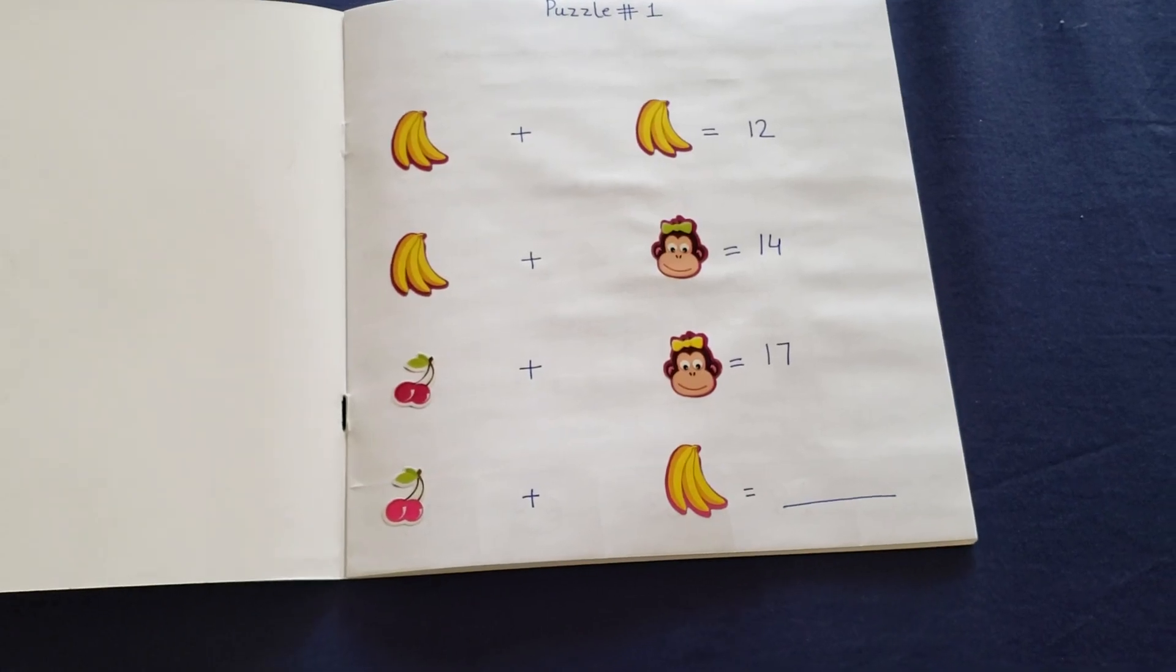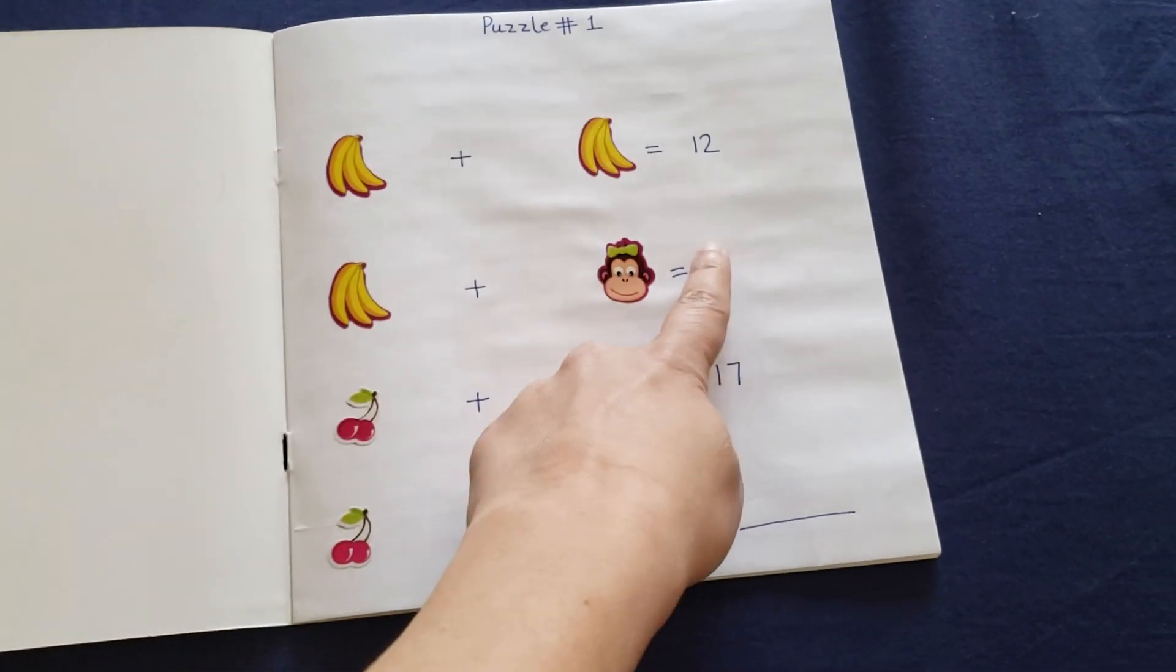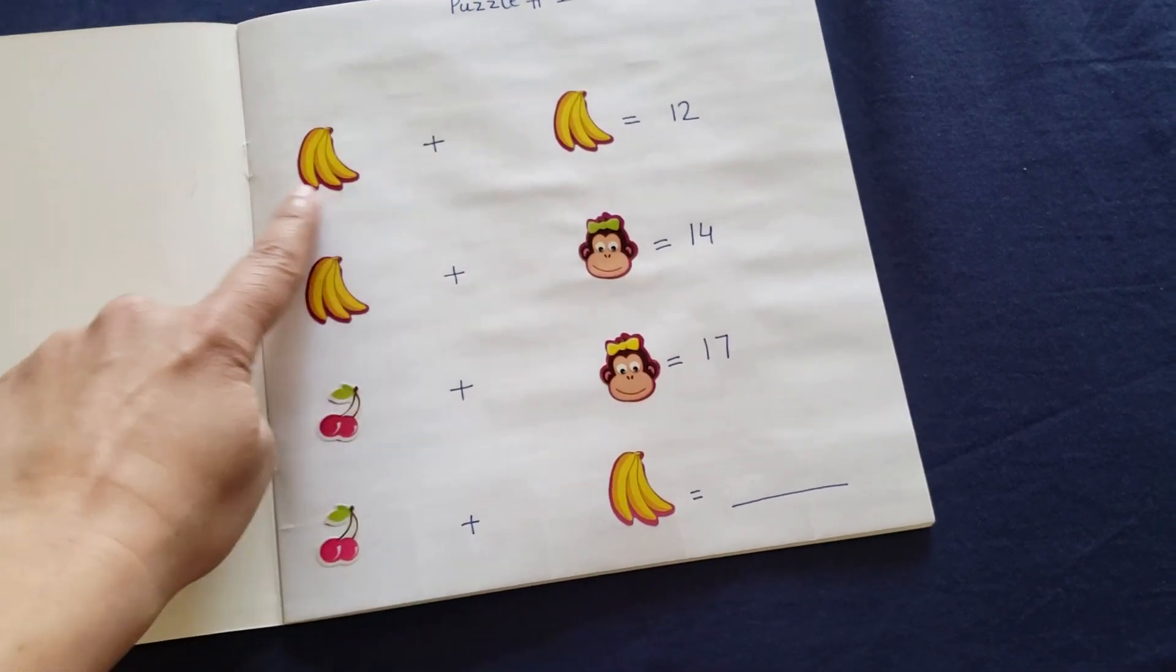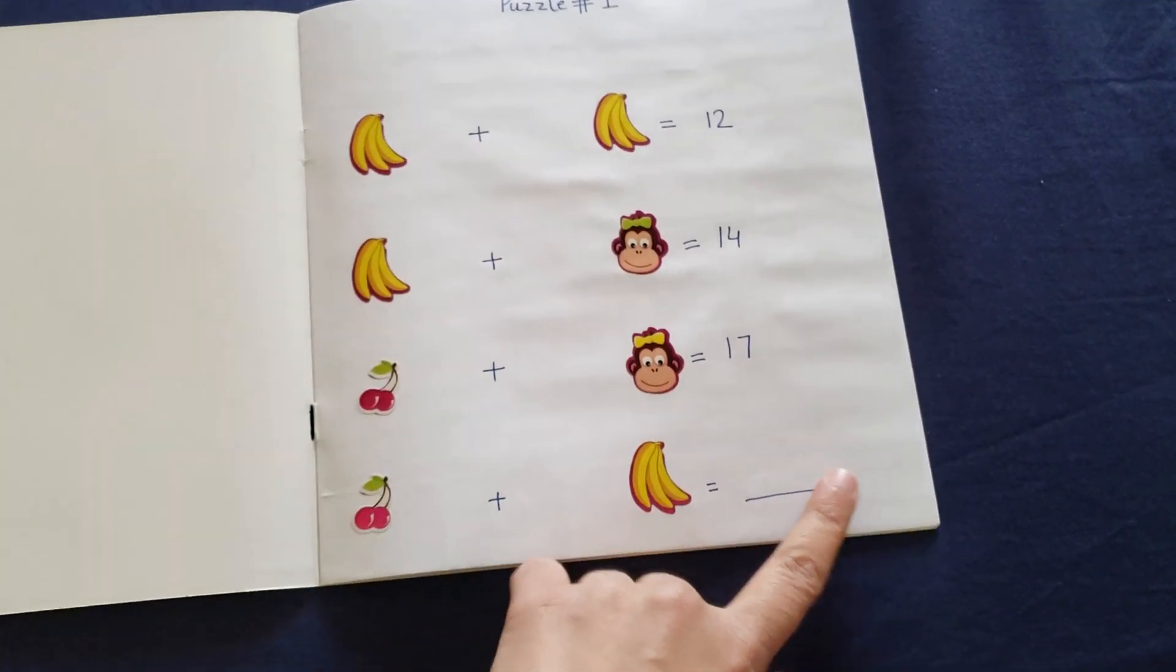You first have a puzzle that you need to resolve. You need to add these two, get a number, and by solving the equation you have to figure out what's the number for this, what's the number of this, and what's going to come right here.